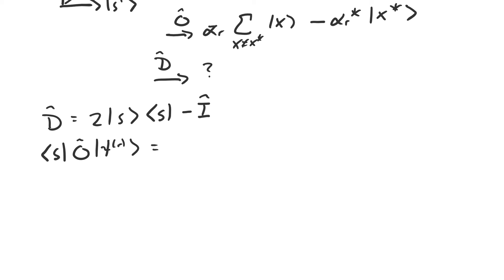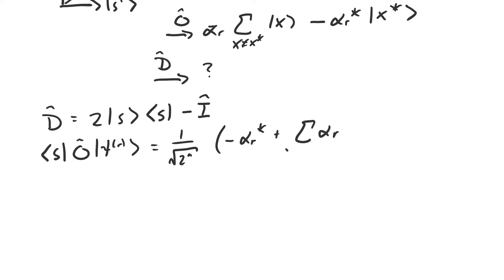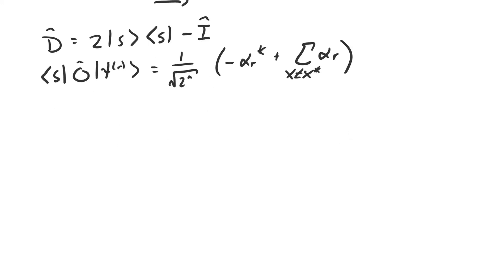The coefficient in front of all of the computational basis vectors in s is 1 over √(2^n). So if we take the inner product between these two vectors, we get 1 over √(2^n) times the contribution from s — that's negative α_r* plus α_r for all the other 2^n minus one basis vectors. It turns out there's a nice way to interpret this quantity.